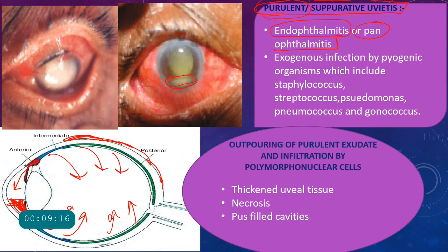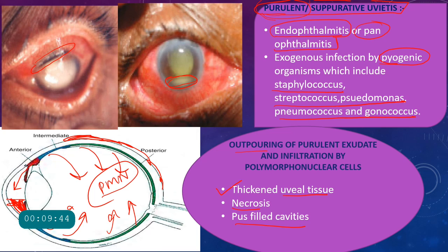The infection is caused by pus-forming pyogenic organisms such as Staphylococcus, Streptococcus, Pseudomonas, Pneumococcus, and Gonococci, leading to outpouring of purulent exudates, infiltration by PMNs (leukocytes), thickening of uveal tissue, necrosis, and pus filling the cavities. On slit-lamp, you can see the gaping incision site, pus in the anterior chamber, haze from vitreous pus, and the hypopyon.